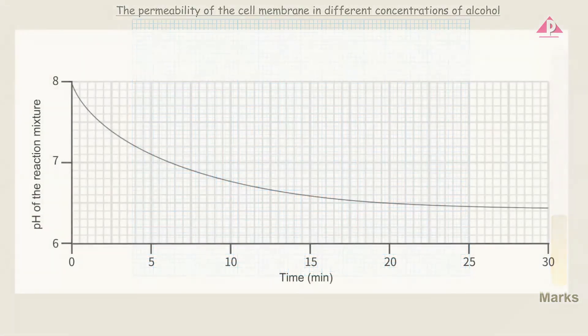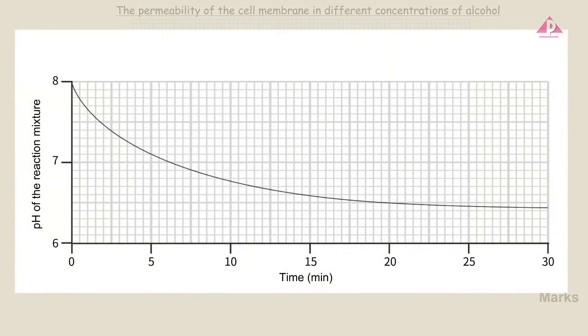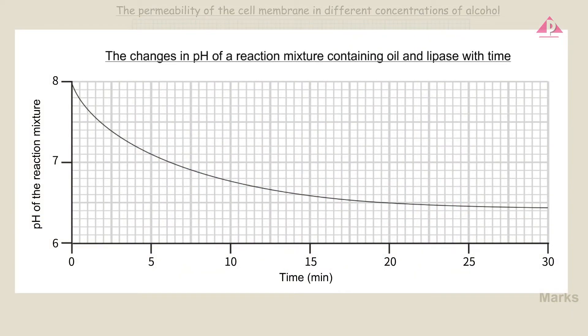If time is the variable shown on the x-axis, we usually write the title in a different format. For example, the title of this graph would be 'the changes in pH of a reaction mixture containing oil and lipase with time.'